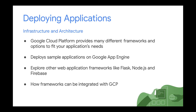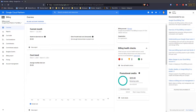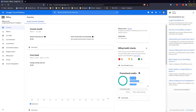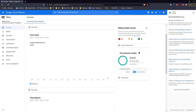Once you guys have filled out the form, you should get an email with a redemption code for the Google Cloud Platform. When you redeem the link, you should be able to see the promotional credits in your billing account.